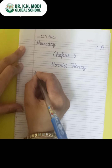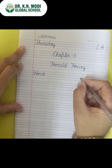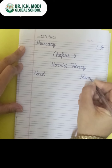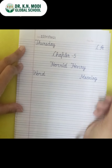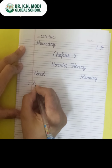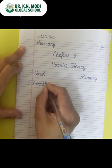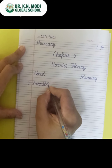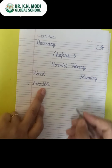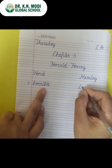First of all we will do word meanings of this chapter. Write down here: word meaning. Now the first word is H-O-double R-I-B-L-E — horrible. What is the meaning of horrible? Horrible means terrible.